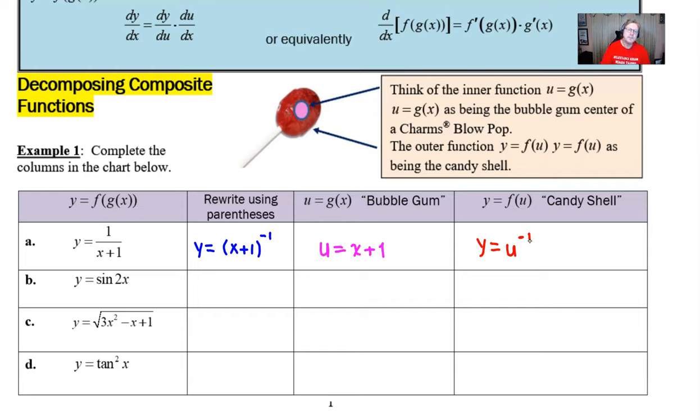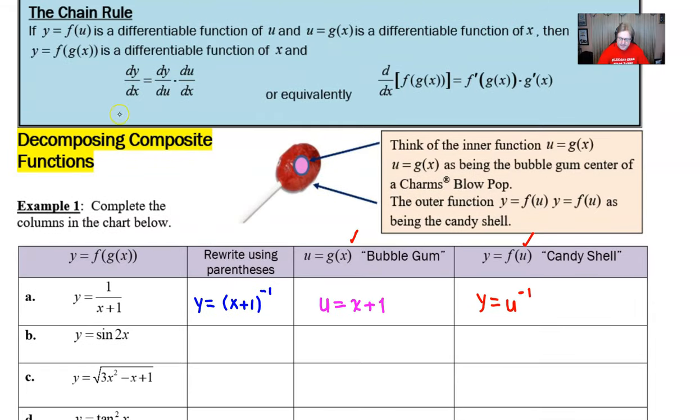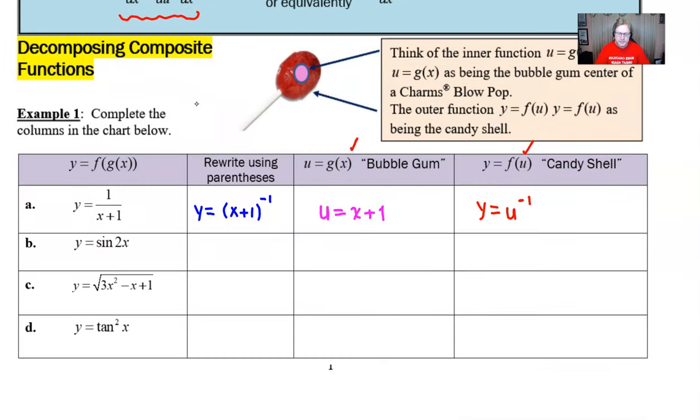What's going to eventually happen in the future videos is that if we take the derivative of this column and we take the derivative of that column, we can multiply those together, and that is what this Chain Rule is telling us to do. Okay, but we're going to hold off on that. I want to just get used to decomposing composite functions.